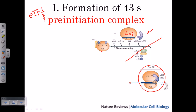Blocking the E site ensures that only the P site remains free, because the first tRNA — the fMet-tRNA — must be placed in the P site. For this, eIF3 blocks the E site, and eIF1 and eIF2 block the A site. This blocking is very important. Once done, the P site is free to interact with the first tRNA carrying fMet, which is formylated methionine.